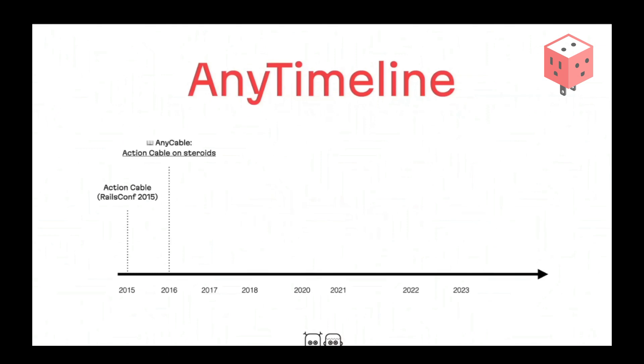I had already worked on something close to Action Cable even before it was announced — a kind of framework for building real-time stuff, but we never used Ruby as a server; we used Erlang back in the day. As soon as Action Cable was announced, I decided there was no reason to build something separate from what's already in Rails. We needed to build something powerful, performant, and compatible with Action Cable. That's how the idea of AnyCable appeared. I started working on it in July 2016, and at the end of the year we made a first release — we called it 'Action Cable on steroids.'